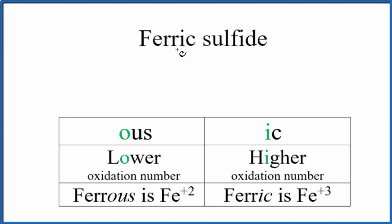When we have 'ic' in an older naming system, that means we use the higher oxidation number for iron. The higher oxidation number is +3, and the lower would be +2.